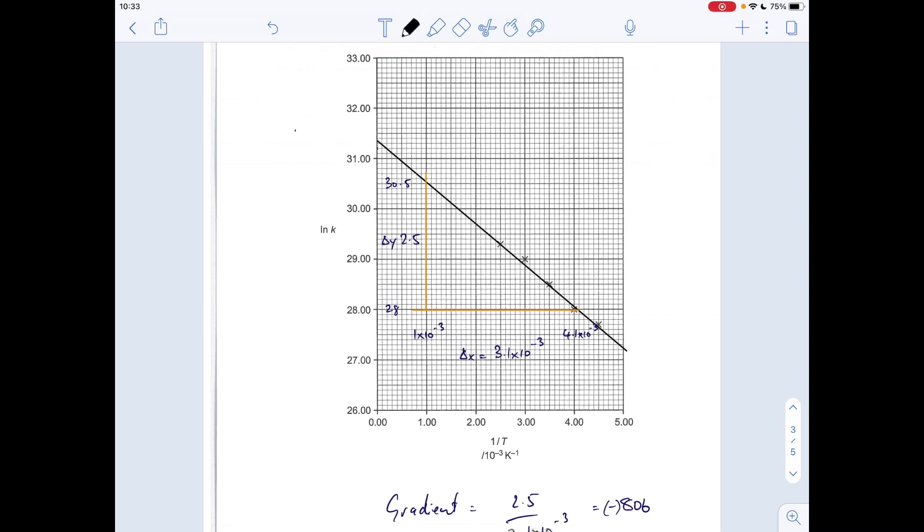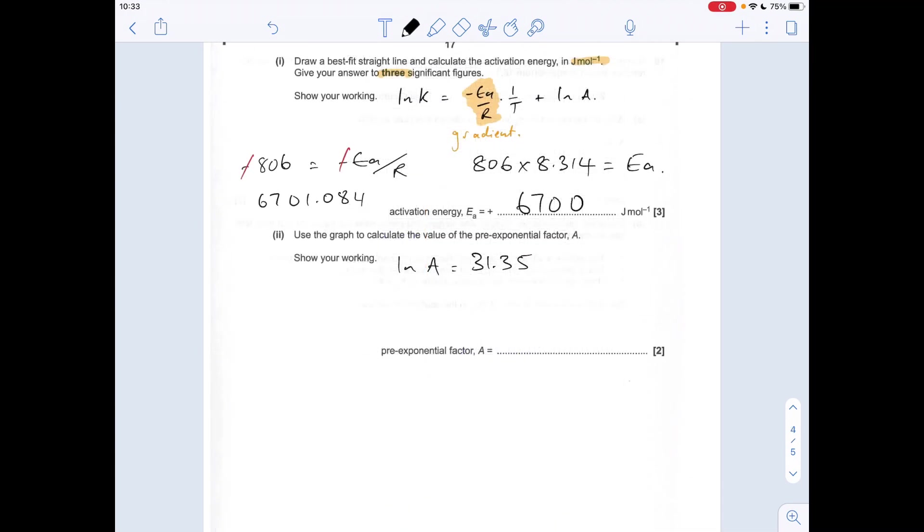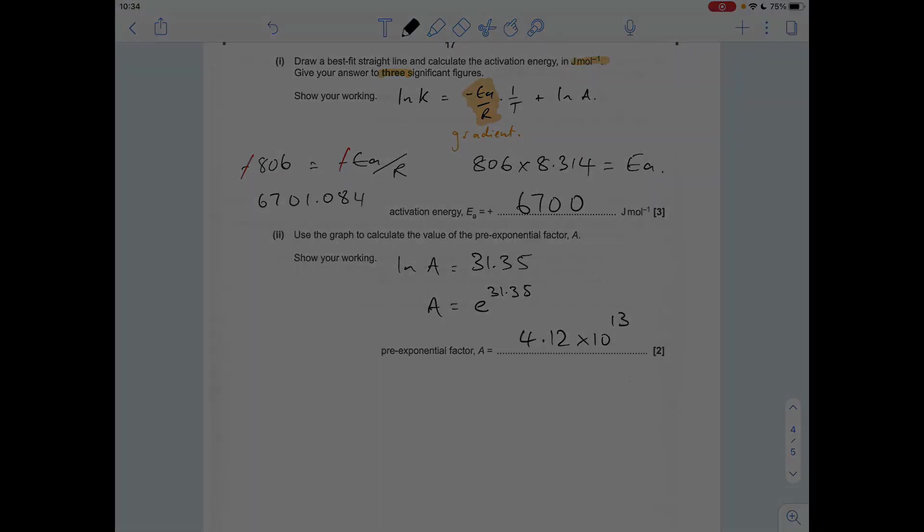So I'm getting a y-intercept of 31.35. So that's the ln of A. So then to work out what A is, I'm going to do the inverse of that, which is, so A equals e to the 31.35. So that's given me an answer. To three significant figures, I'm going to go of 4.12 times 10 to the 13.